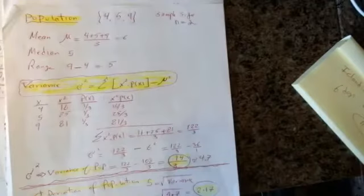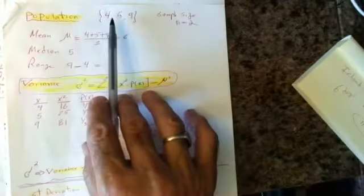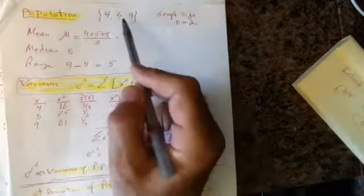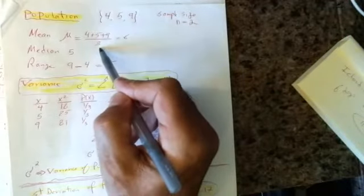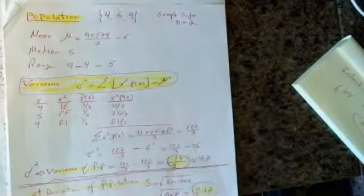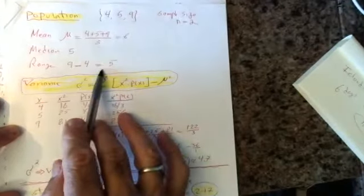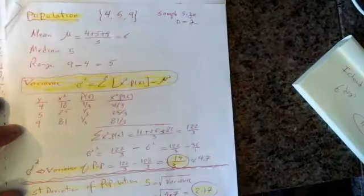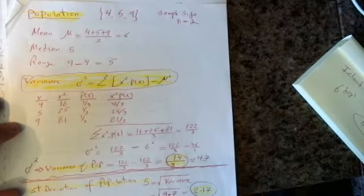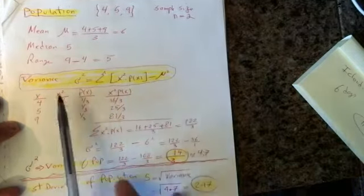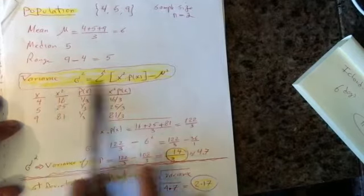If you have only three numbers and we ask you to calculate the mean: mean is you take all three of them and divide by three, so that would be your mean of the population. What's the median? The number exactly in the middle is five. What is range? Range is maximum minus minimum. So these are all just for these three numbers. Assuming your population has only three numbers, how would I calculate the variance and standard deviation of the population? We use this formula.